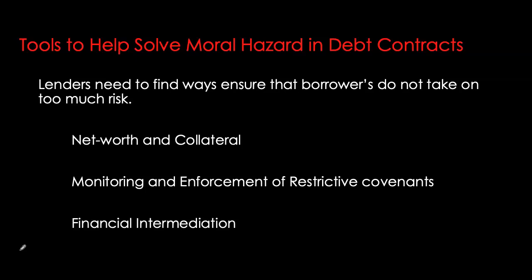This brings us again to the role of financial intermediation. Because of economies of scale, financial institutions have the facilities to monitor and enforce restrictive covenants on all borrowers they deal with. They can avoid the free-riding problem by making private loans. This leads to the reduction of moral hazard in debt contracts and explains why financial intermediation — indirect finance — plays such a huge role in external financing for businesses compared to direct finance.